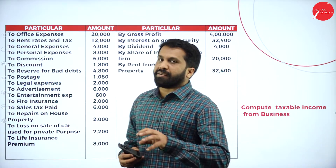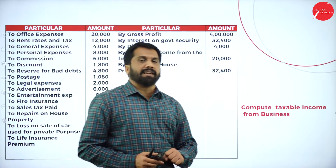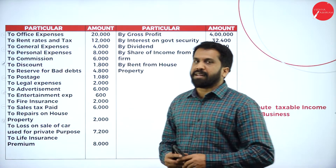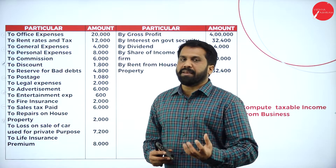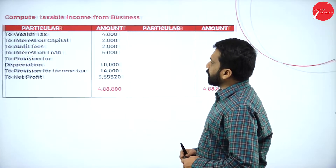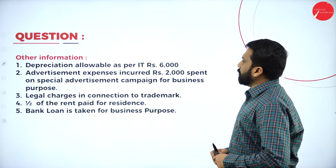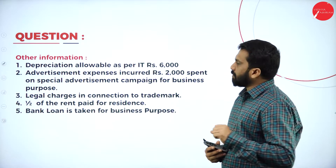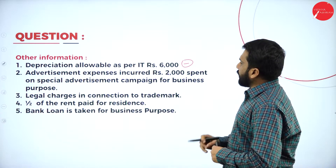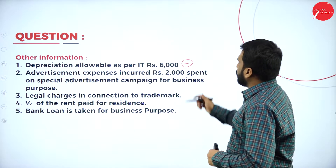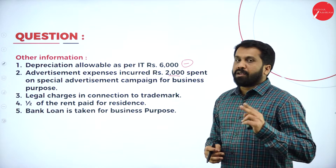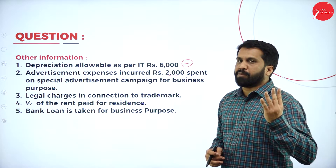Few expenses are related to business and few are not related to business. We have to identify those expenses which are not related to business, because that is the main thing we need for our answer. Now, before we see this, we will go to the adjustments. Depreciation allowable as per IT — you know that we take it in the minus, as allowed items. Next, advertisement: 2,000 was spent on a special advertisement campaign for business purpose, so 2,000 is for business, meaning the balance 4,000 will be personal.